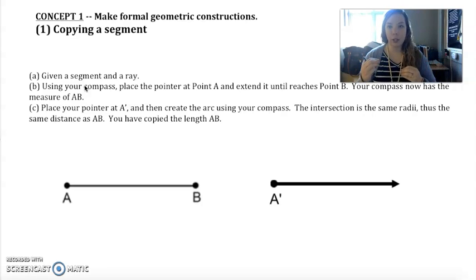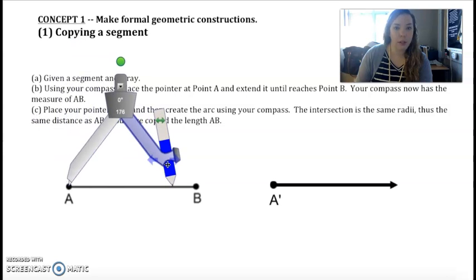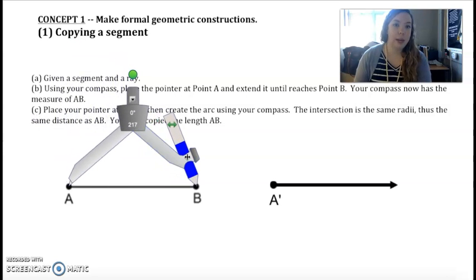We're taking segment AB and turning it into what we call A prime B prime. Those little apostrophes we read as prime out loud. We're trying to copy this segment onto the ray. So again, we need a compass. We're going to put our pointer on part A and then we're going to stretch it so that it's the length from A to B.